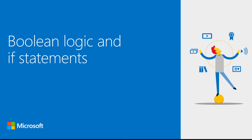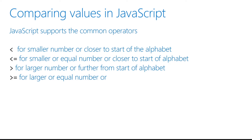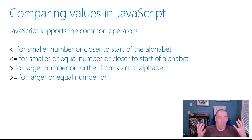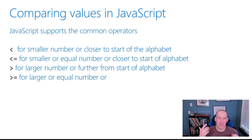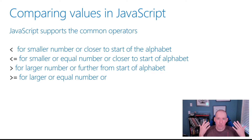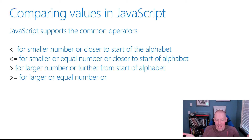So let's get right on into it. When it comes to comparing values or Boolean logic inside of JavaScript, what you're going to notice is that the operators for less than, greater than, less than or equal, and greater than or equal are pretty consistent with all programming languages. You can see them all right there and there's really no surprises.